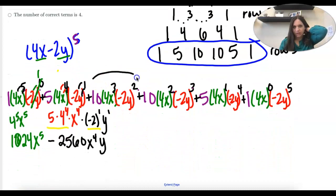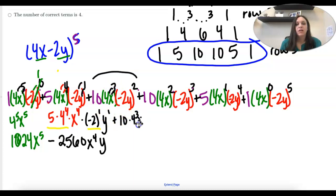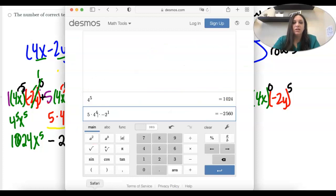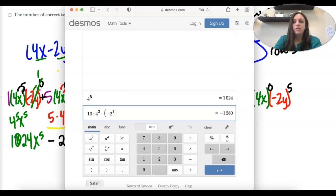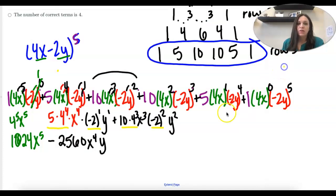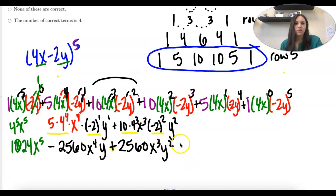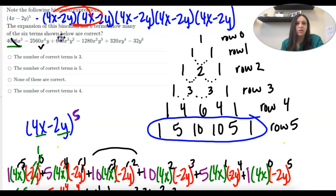Let's look at our third term. I have plus 10 times 4 to the 3rd, x to the 3rd, negative 2 squared, and y squared. Make sure you put parentheses around the negative — so negative 2 squared is positive 4. That gives us 10 times 64 times 4, which is positive 2,560, x cubed, y squared. That's our third term, and that one is not correct.